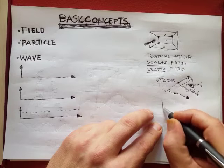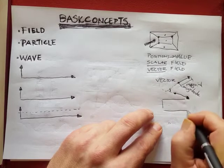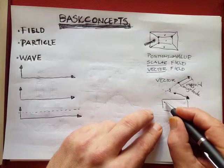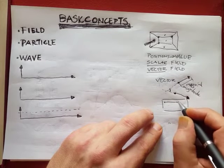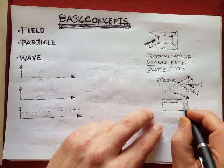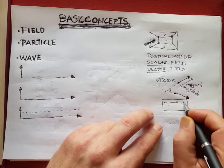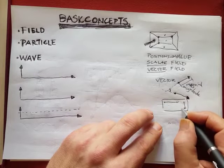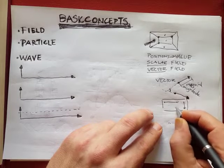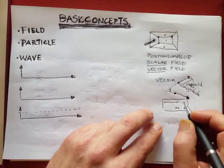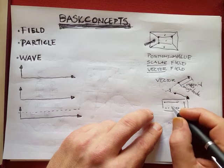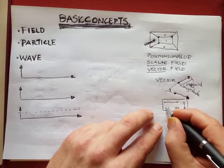An example of a vector field is wind speed. You can have in this point here you can have a very strong wind in that direction. And then in another point you may have a less strong wind that goes in another direction. And over here you can have a very weak wind that goes in this direction. And over here you can have zero vectors.